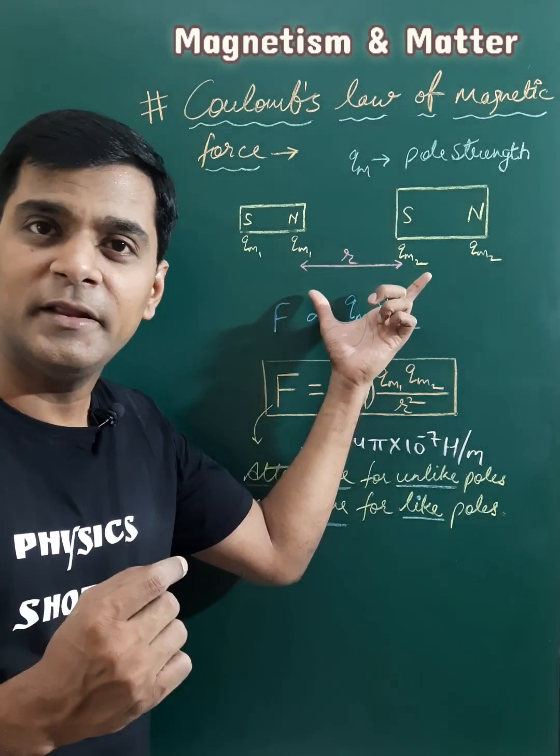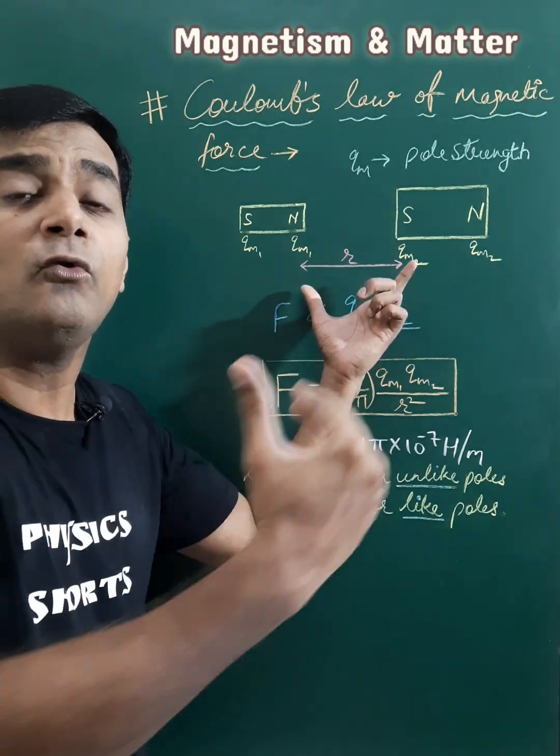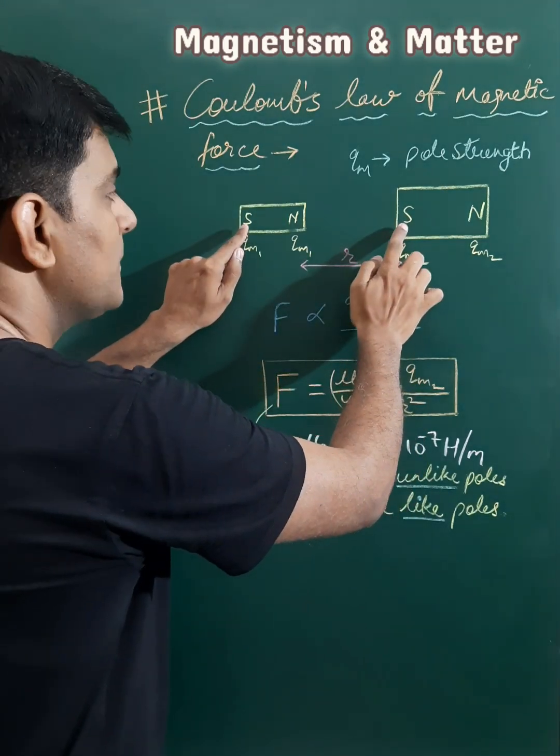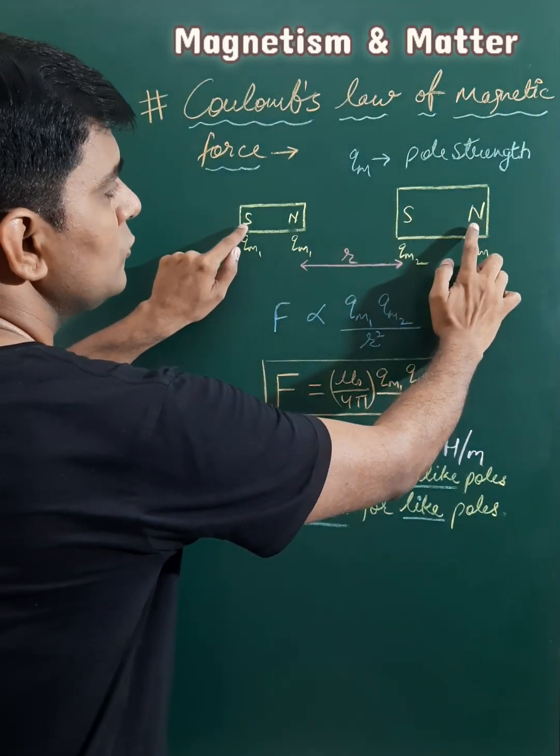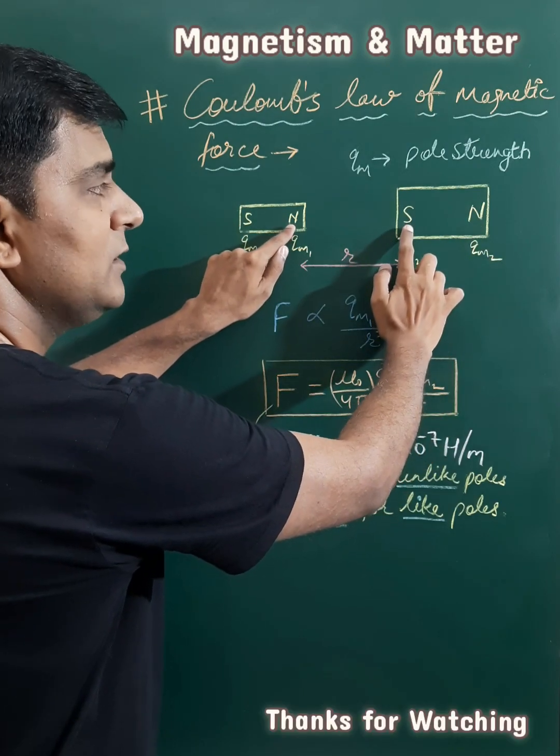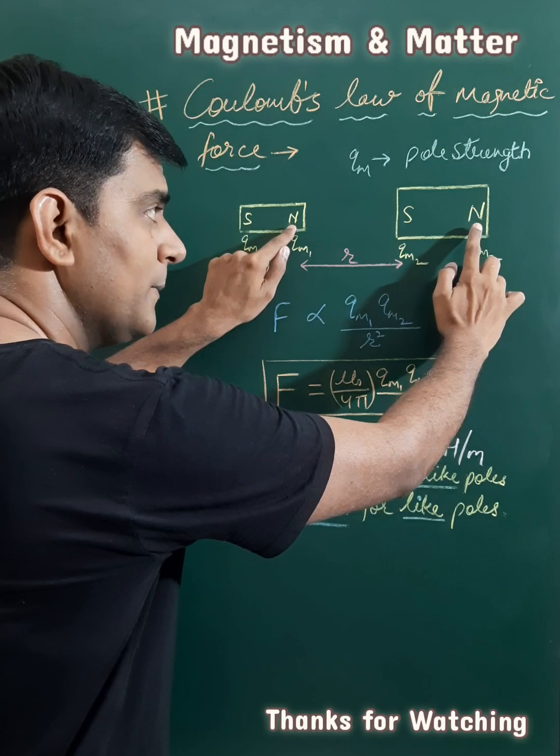When two magnets are placed at some separation, there will be four forces between the magnets. The first force between these two south poles which is repulsive, second force between these two south and north poles which is attractive, third force will again be attractive between these two poles, and fourth force will again be repulsive.